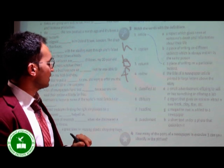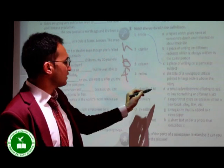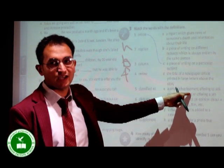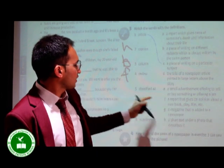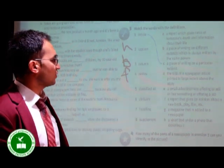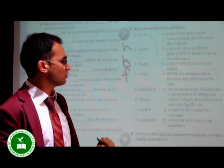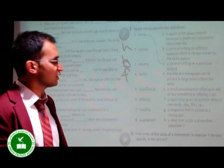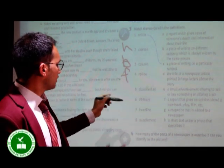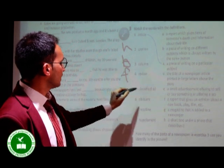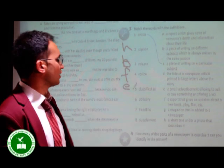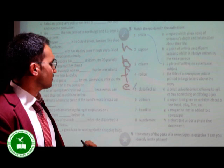And the next one is classified ad. Ad is the short form of advertisement. So, see? Classified ad means a small advertisement offering to sell or buy something. Okay? So, it is which one? Letter E.